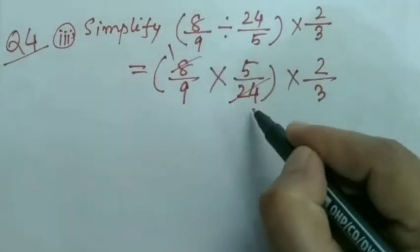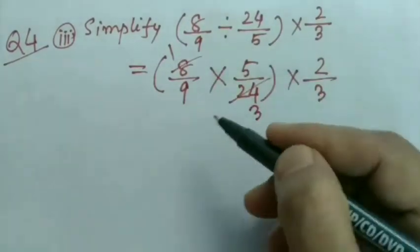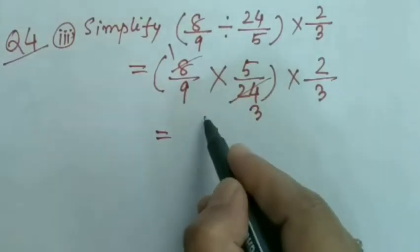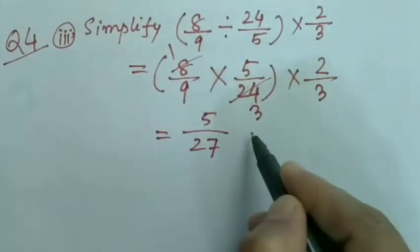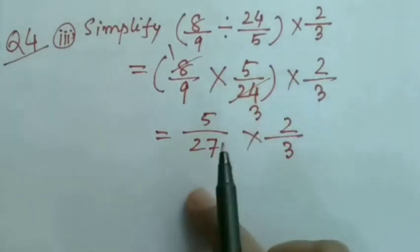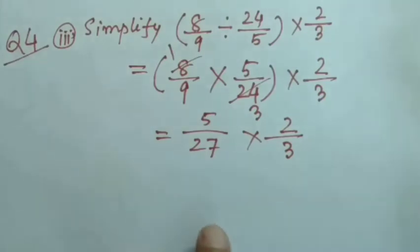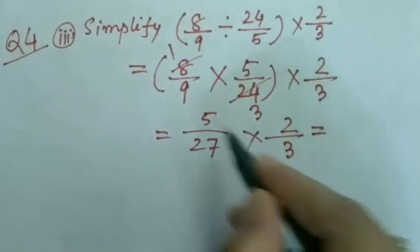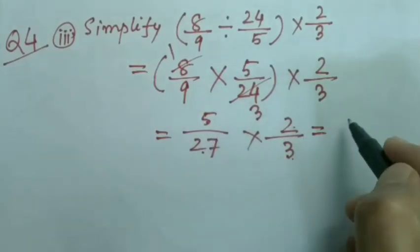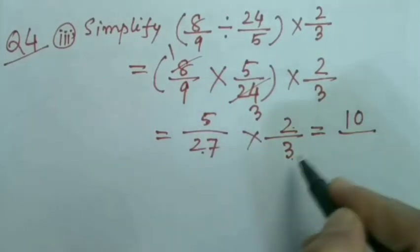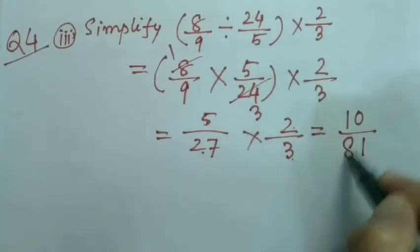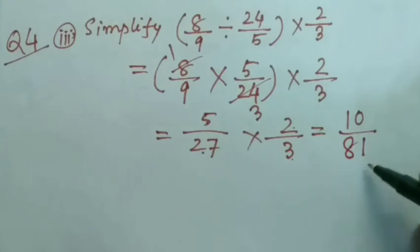This equals 5/27 × 2/3. There's no common factor, so I'm multiplying directly: numerator with numerator, denominator with denominator. 5×2=10, and 27×3=81. So the answer is 10/81.